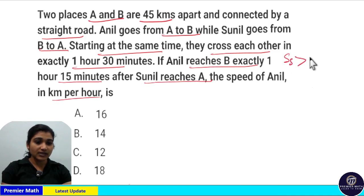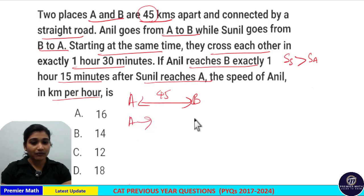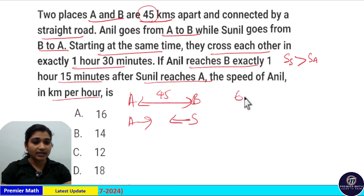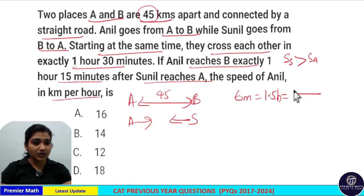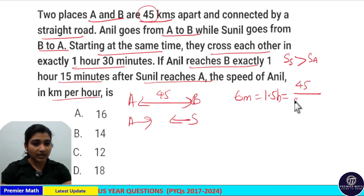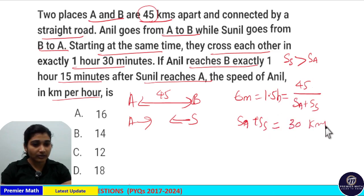Clearly, the speed of Sonil is greater than the speed of Anil because Anil takes a lot more time than Sonil to cover the same distance. The distance between A and B is 45 kilometers. Anil starts from A to B while Sonil starts from B to A, and their time of meeting is 1.5 hours after their start. As they are traveling in opposite directions, their relative speed is the sum of their speeds. So the sum of their speeds is 45 divided by 1.5, which equals 30 km/h.